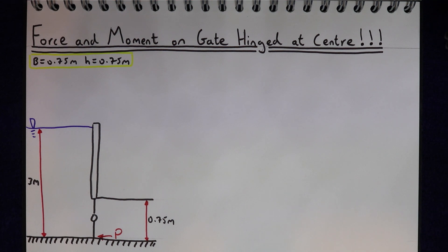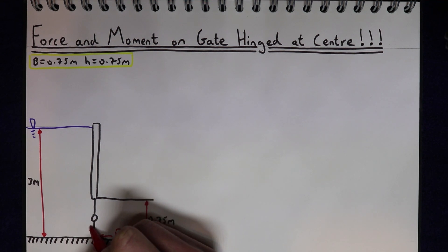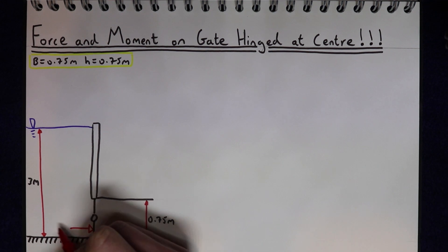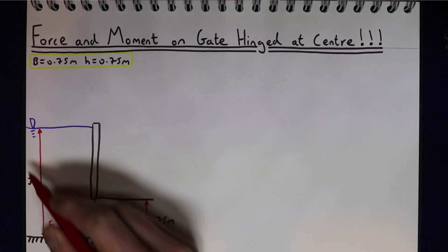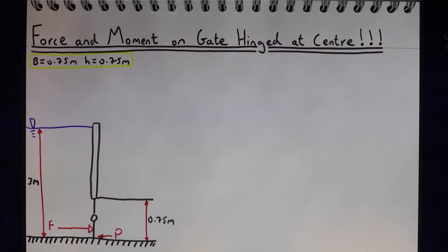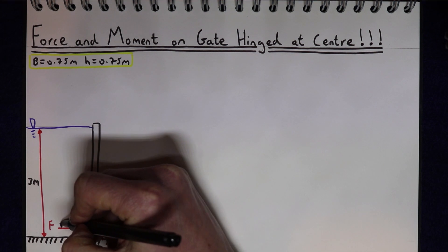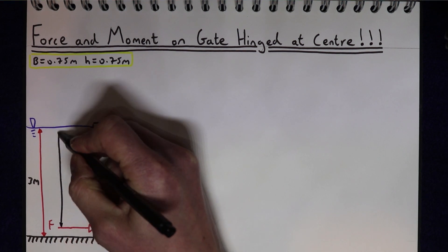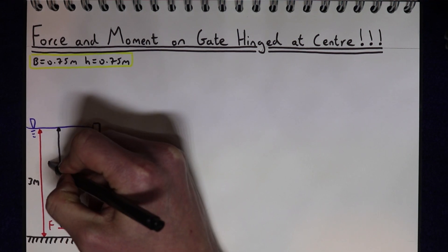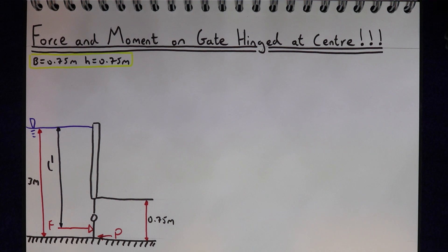What we've got going on here is a force F acting on the gate as a result of all of the water behind the gate, and that force is acting at a certain location, L dash. The first thing we need to do in this problem is work out the total force on the gate and where it acts.